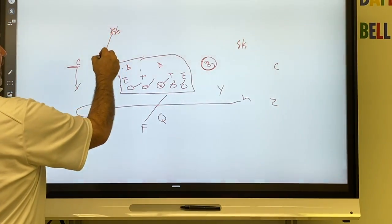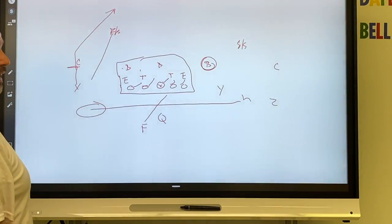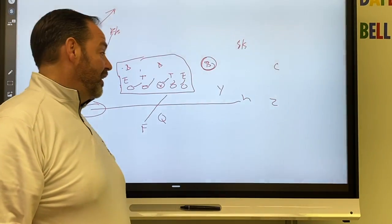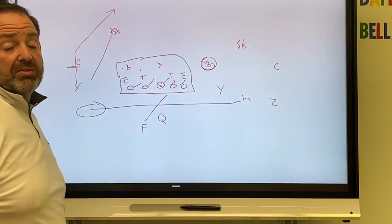They can roll the safety down, and then that's when you now can play action and run the post. And that's just one way to use formations and motions to protect your inside zone.